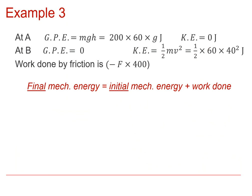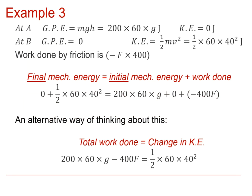Let's compare the two formulations. The approach used was: final mechanical energy equals initial mechanical energy plus work done. Alternatively, the total work done — including work done by gravity on the skier and work done by friction against the skier — equals the change in kinetic energy. Comparing the two, they are mathematically equivalent. It's just a slightly different way of thinking about it if you prefer to reason in terms of kinetic energy only.